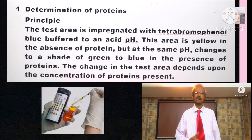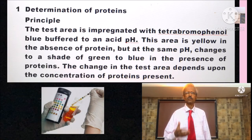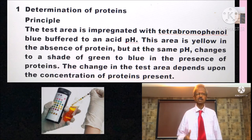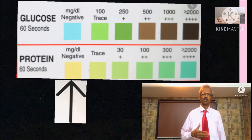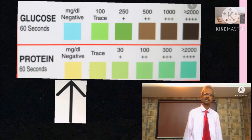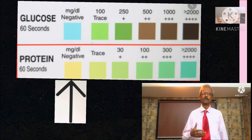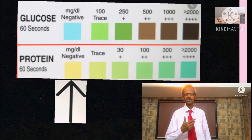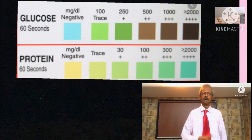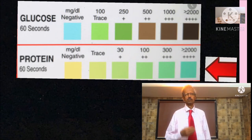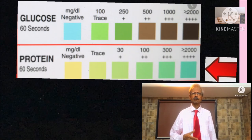Now let us discuss the principles involved in the various tests. For protein determination, the test area is impregnated with tetra-bromophenol blue buffered to an acidic pH and this area is yellow in the absence of protein. But if proteins are present in urine, these proteins react with tetra-bromophenol blue and color changes to various shades of green to blue according to the concentration of proteins.